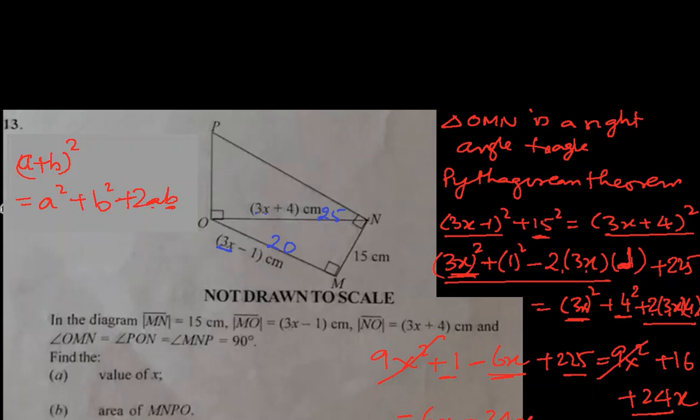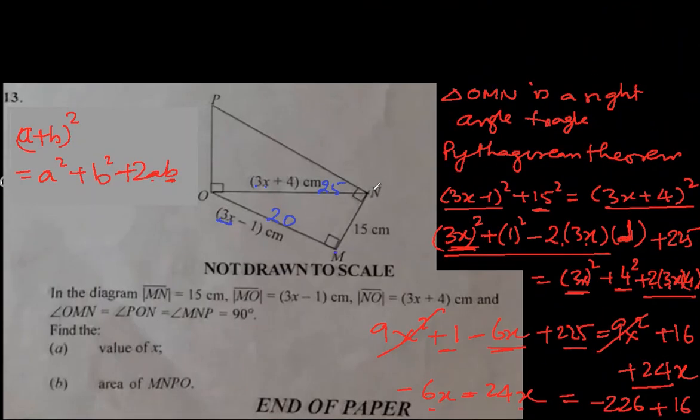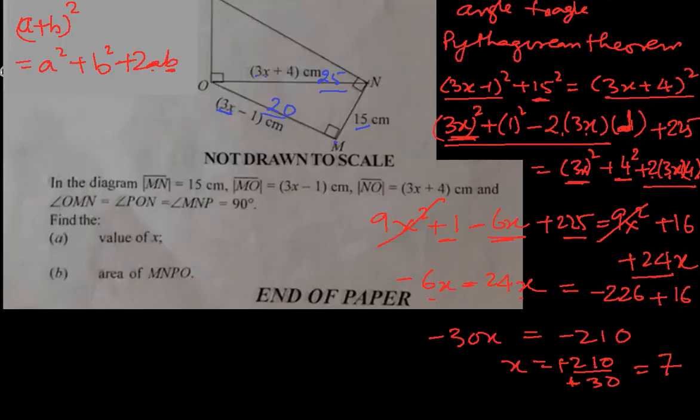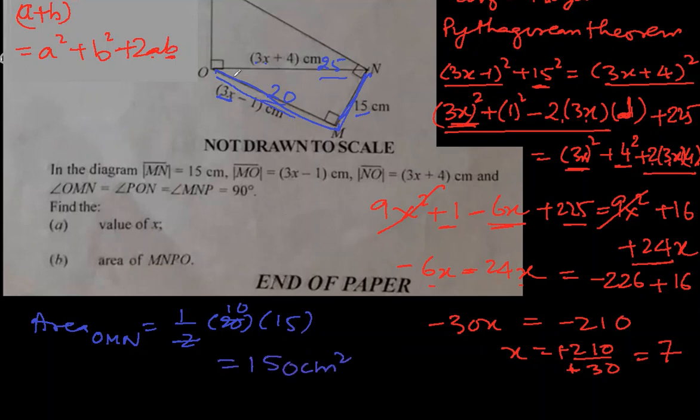Now we need to find the B part. B part says find the area of MNPO. MNPO is this shape. We know that it is made up of two right angle triangles. So if I find the area of this triangle first and then this triangle on top, add them, we'll get the area. Let's find the area of the triangle where we know all three sides 15, 25 and 20. The area of triangle OMN is half base times height. Base will be the one which is having 90 degree on it. So this is the base 20 and the height is 15. Half of 20 times 15, 150 centimeter square is the area of the lower triangle.